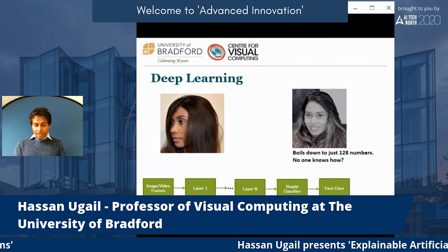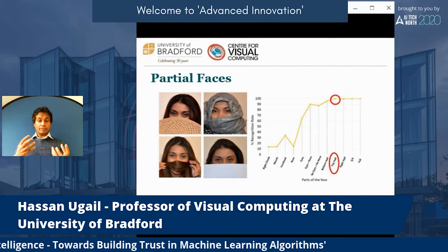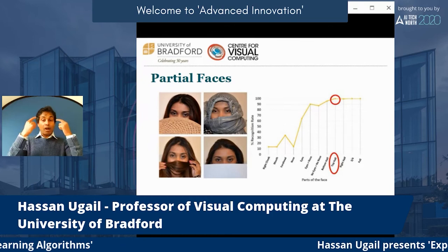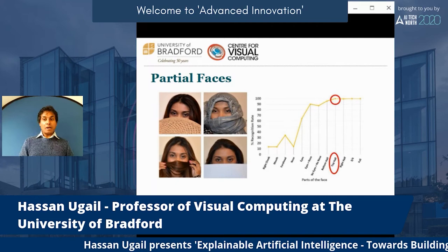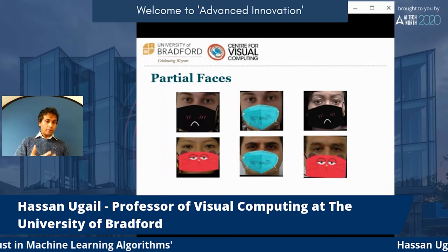We've done work looking at how different parts of the face react in face recognition. We found that only the top half of the face is actually enough to recognize somebody, as I pointed out in the previous example. This is very relevant today, because we are working on face recognition that needs to be reworked so that faces can be recognized using masks too.